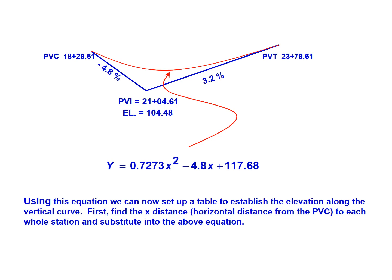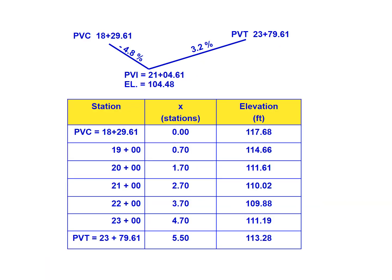We're asked for the whole stations, so we'll set up a table using this equation to find each elevation of interest. The table has columns for station, x-distance in stations, and elevation. Starting with the PVC, we then go in whole stations as the problem asks: stations 19, 20, 21, 22, and 23, ending at the PVT station.